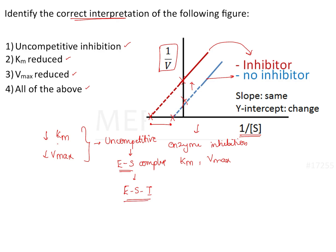In uncompetitive inhibition, both Km and Vmax show a decrease, and the graph in the question shows a change in both x-intercept and y-intercept, indicating a decrease in both Km and Vmax. Therefore, this graph denotes uncompetitive inhibition, making option 1 correct. Option 2 showing decreased Km is correct, and option 3 showing decreased Vmax is also correct. Therefore, the correct interpretation is option 4: all of the above.